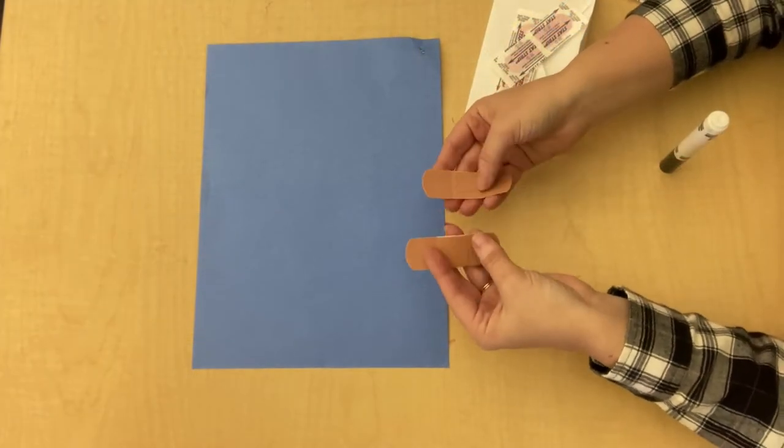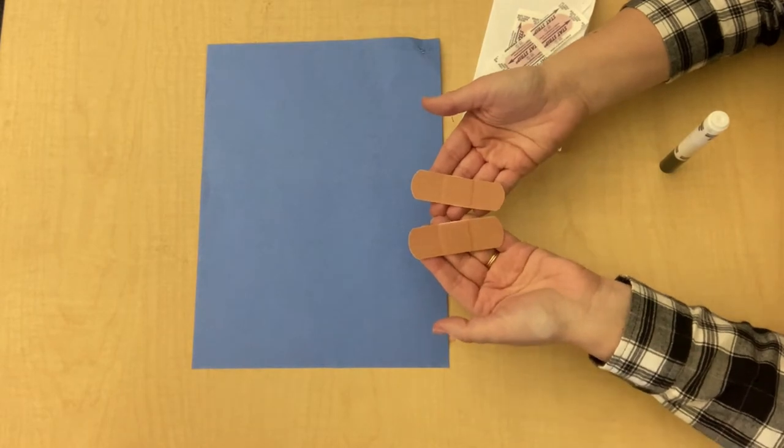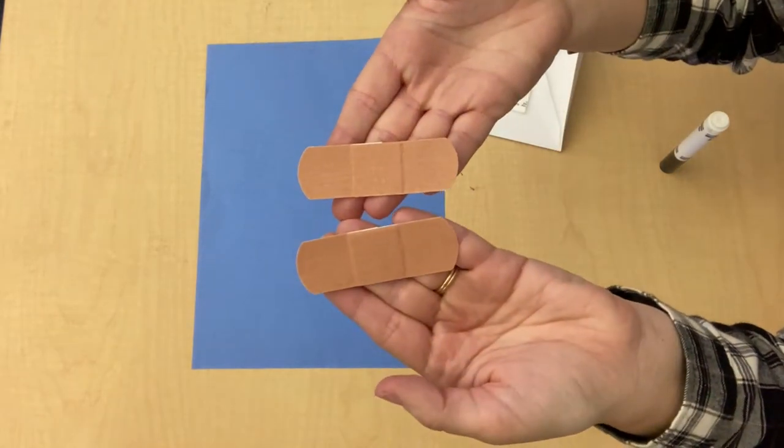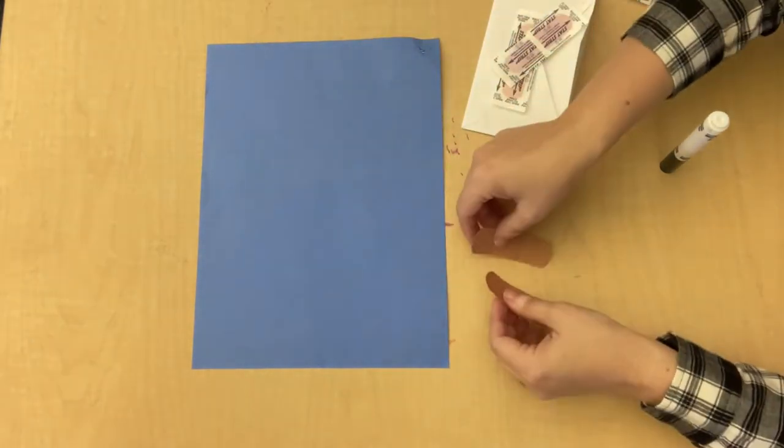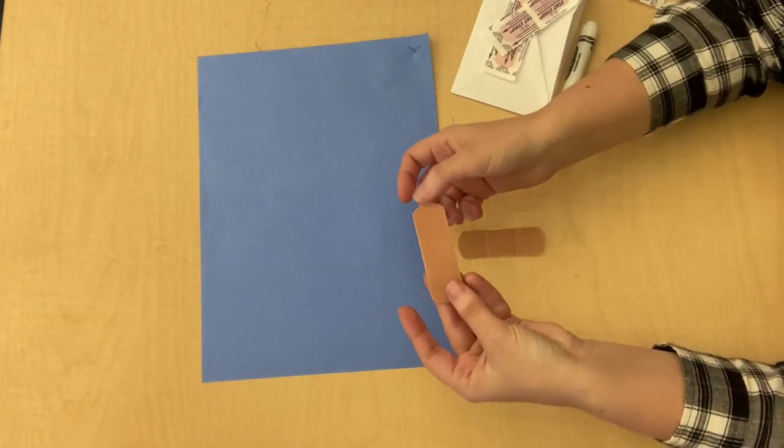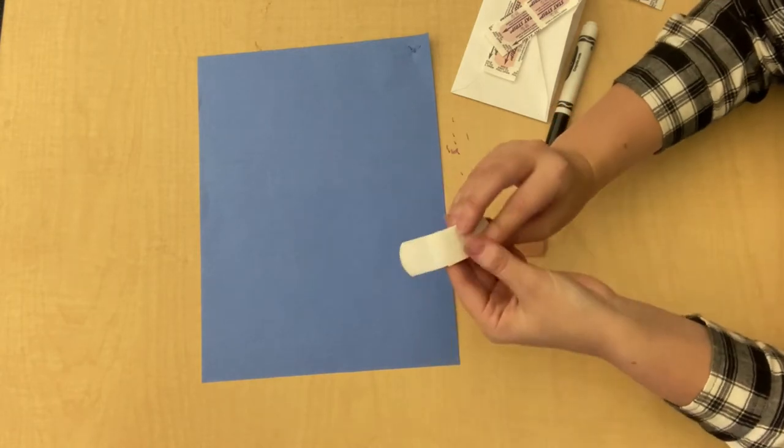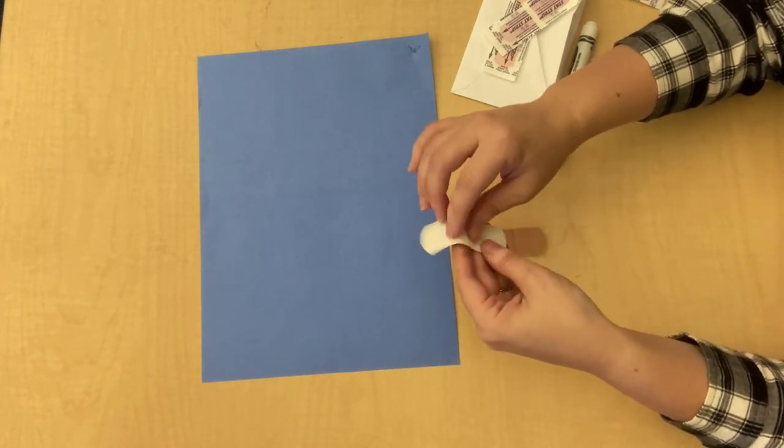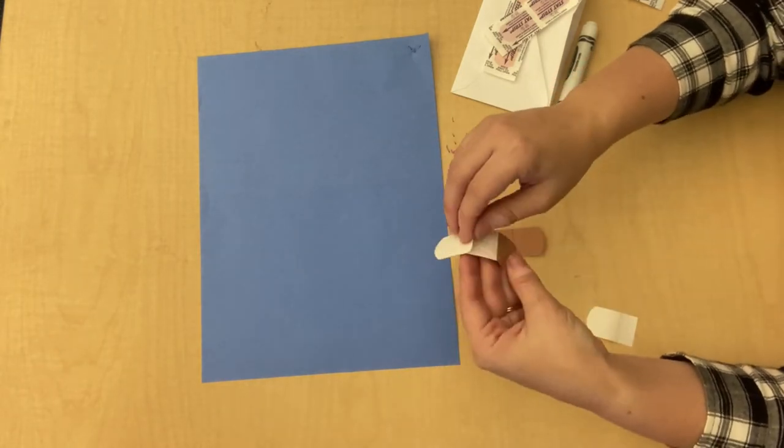You can start by opening up some of your band-aids. You're going to have two band-aids that are tan like this and then the other ones are all colorful. We're going to start by taking apart our tan band-aids and taking off the back and we're going to use these just like we would use a sticker.